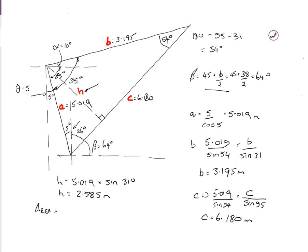And therefore, the area equals 0.5 times the base of the triangle, which is C, which we calculated at 6.180, times the height of the triangle, which is 2.585 meters we just calculated.